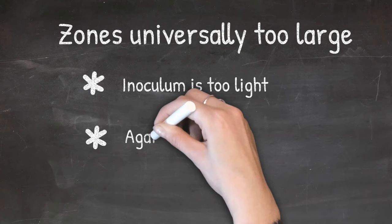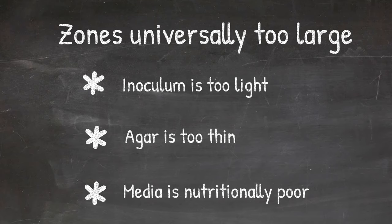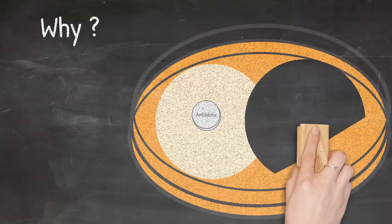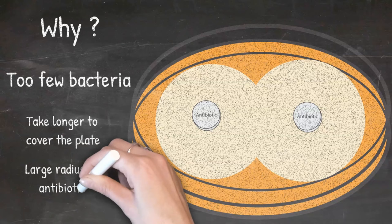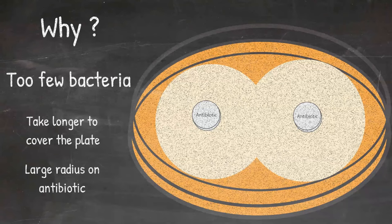Inoculum is too light, the agar is too thin, or nutritionally poor media. Why is that? If the inoculum is too light, then it would take the bacteria longer to grow to cover the whole plate. But the antibiotic diffuses at the same rate. This leads to a larger zone of inhibition than expected.